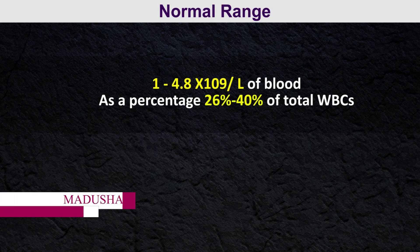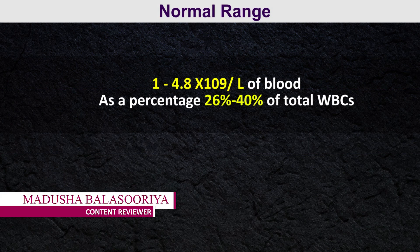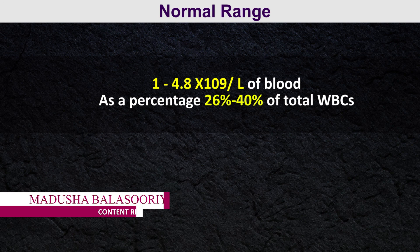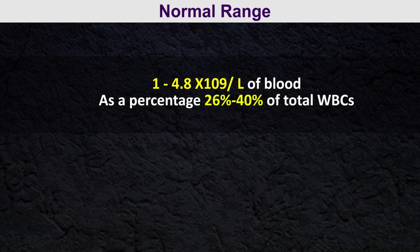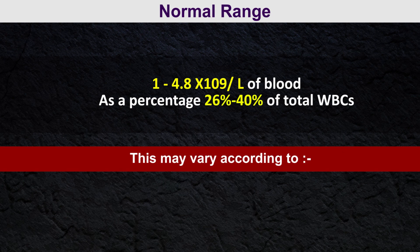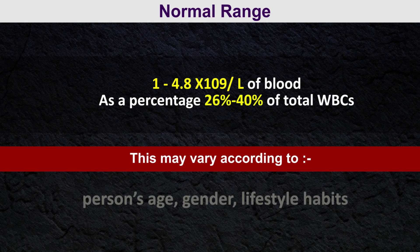The normal range is about 1 to 4.8 × 10⁹ per liter of blood. As a percentage, it is 20 to 40 percent of total white blood cells. However, this may vary according to a person's age, gender, and lifestyle habits.